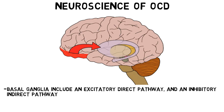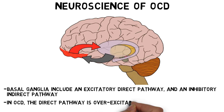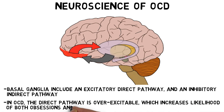When the orbitofrontal cortex sends a signal to the basal ganglia, it often leads to an action designed to alleviate the discomfort caused by the perceived danger. That action is mediated by the direct pathway. In a healthy person, the indirect pathway then inhibits further action. In someone with OCD, however, the direct pathway is overexcitable, drowning out the activity of the indirect pathway and causing a difficult time switching to a different behavior or turning focus away from the concern.